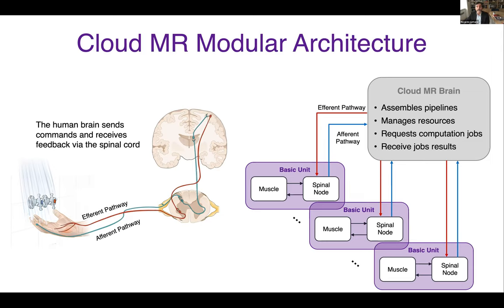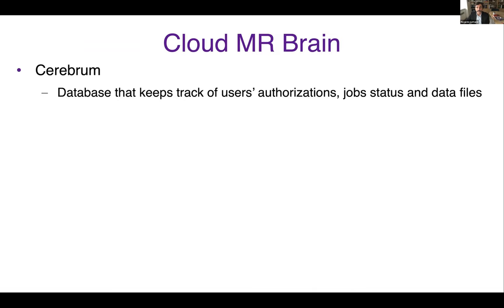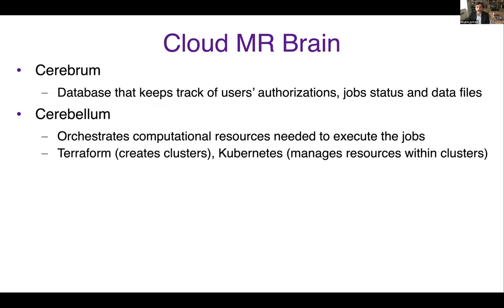The brain is divided into three components. The first one is the cerebrum, which is a database that keeps track of user authorization, job status, and data files. At the moment we have one cerebrum, but there could be more. As the cerebrum keeps track of all computations, it will allow us to run statistics on usage for the various applications. The second component is the cerebellum, which orchestrates computational resources needed to execute the jobs.